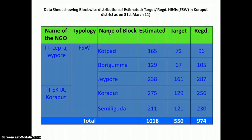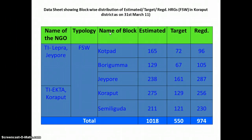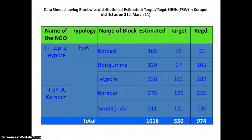This data sheet shows the complete summary of estimates, targets, and registration. The total overall estimate is 1,080. The target was 550. Overall registration for the last financial year was 974 against the target of 550.